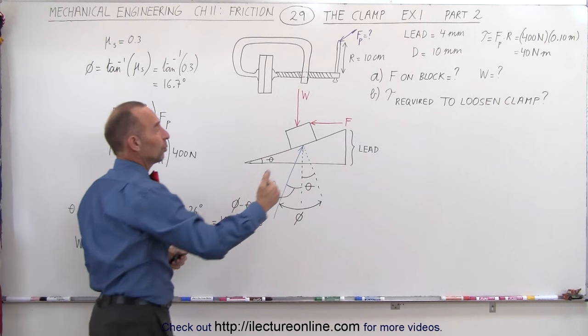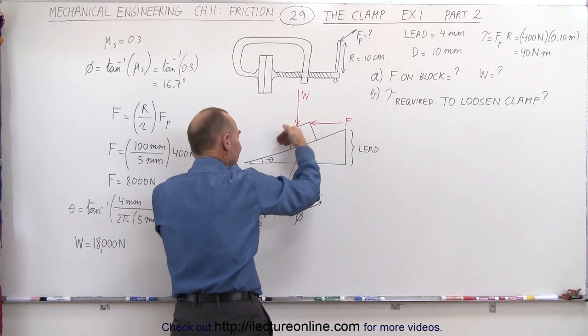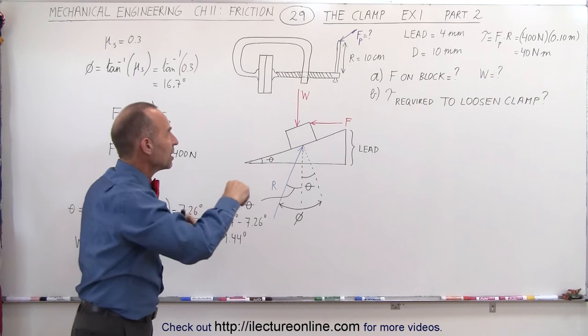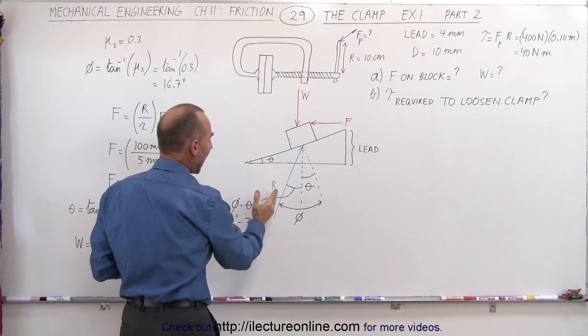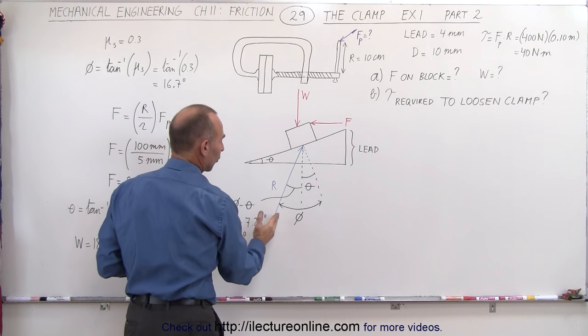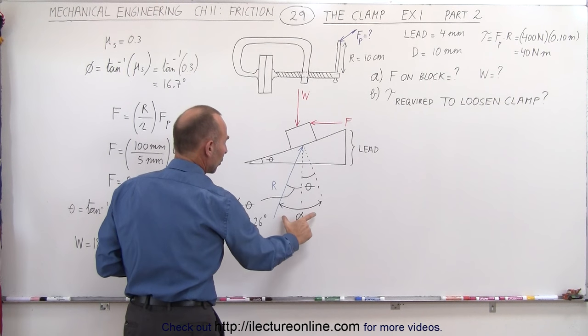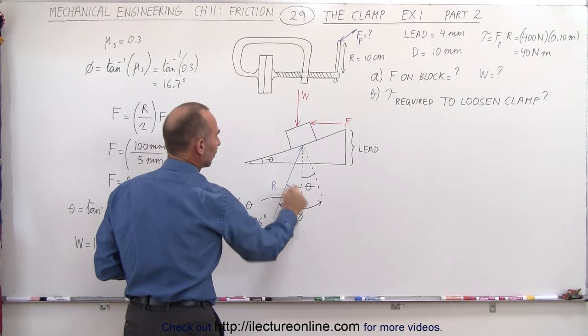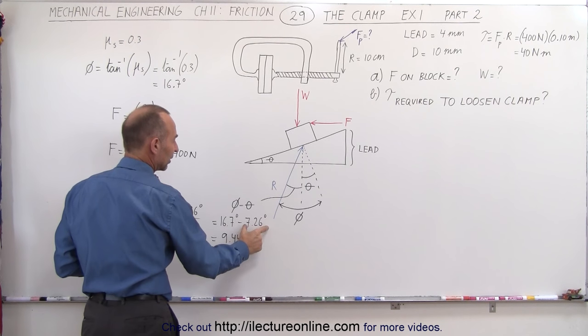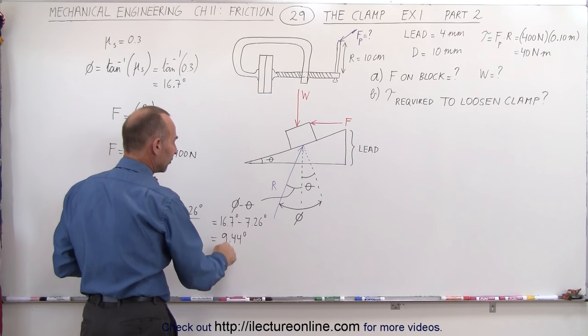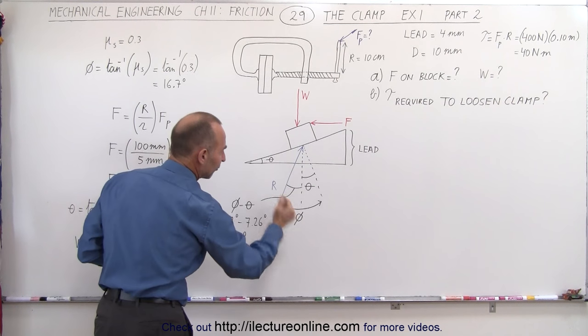Now what's going to happen is we need to apply a force to get the thread to go basically down the slope of the clamp, so to speak, the thread of the clamp. This means that the angle between the reactionary force and the vertical is going to be this angle right here, which is the angle phi minus the angle theta. Phi being 16.7 degrees and theta the lead angle, we have an angle of 9.44 degrees between the reaction force and the vertical.